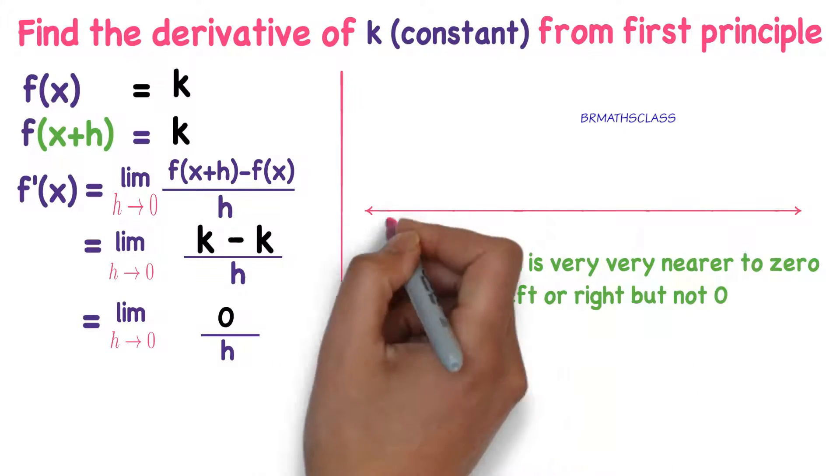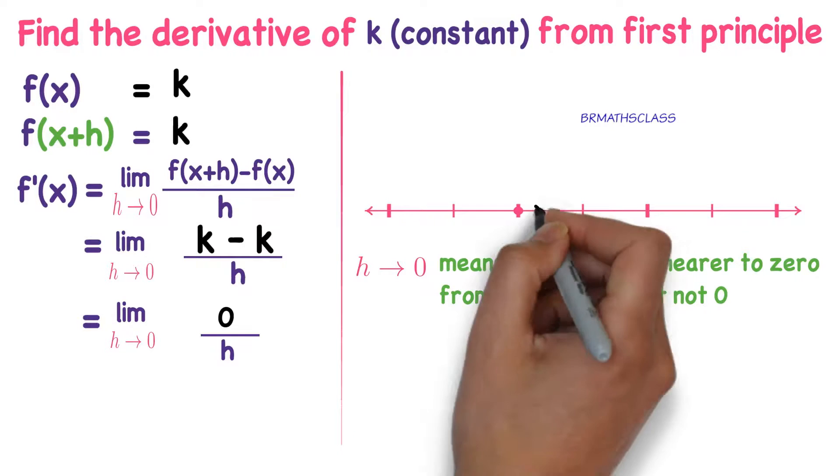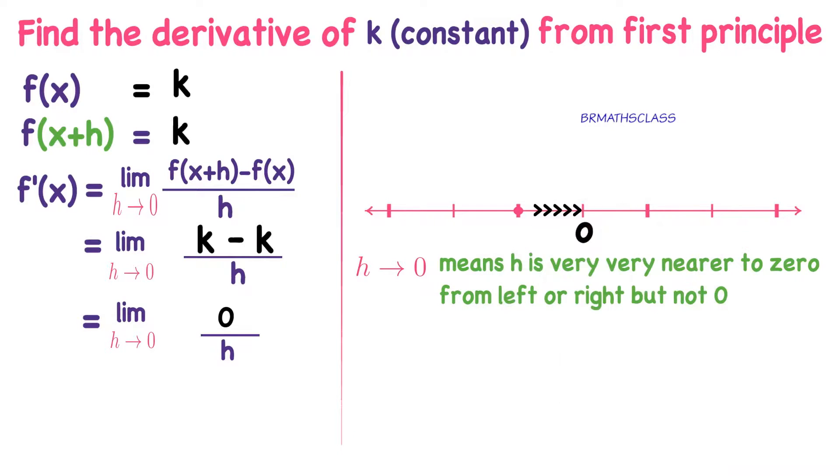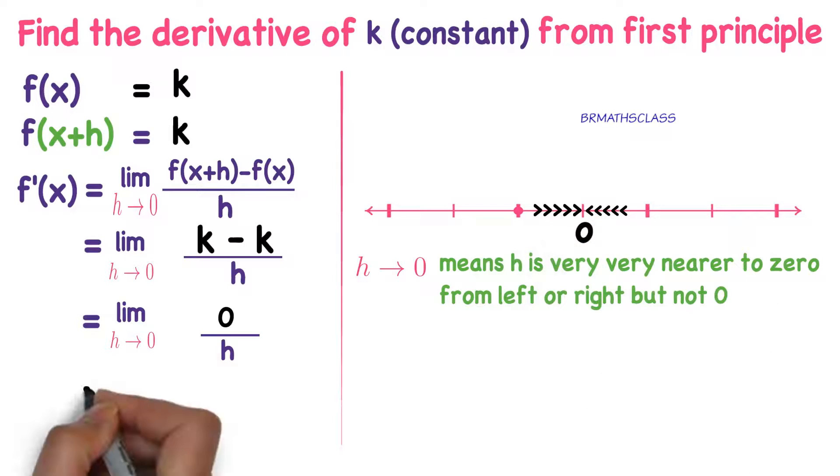You see the first class of this chapter, you can understand this. h approaches to 0 means h values are very very nearer to 0 from left or right, but not 0.